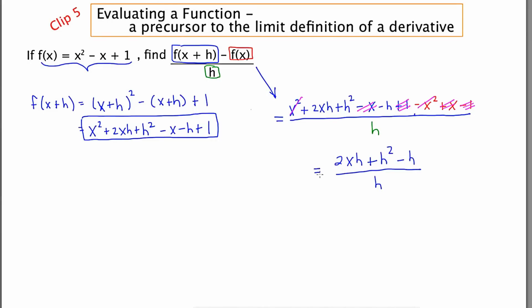Now there's one more thing we can do and that is to factor out an h from the top. If we do that, we're left with 2x plus h minus 1 over h. And then these h's are going to cancel out. So we're left with a final answer of 2x plus h minus 1.